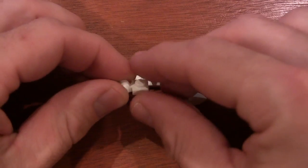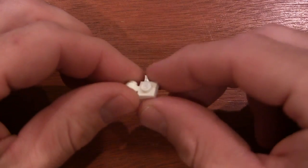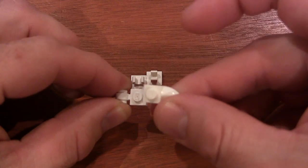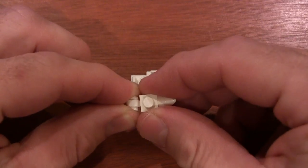The first thing we're going to do is grab one of these one by one plates with ring clip on side, and on that front stud we're going to get a one by one tooth plate and just put it right there on top like that.